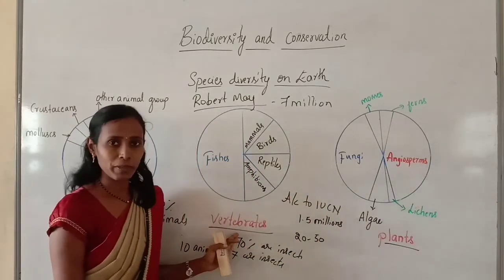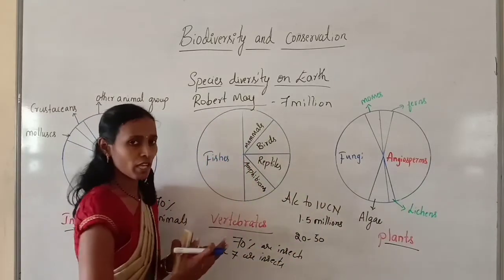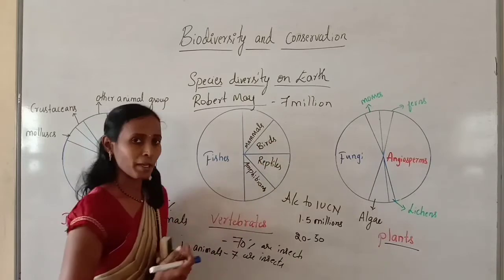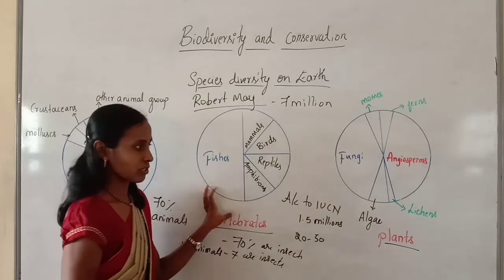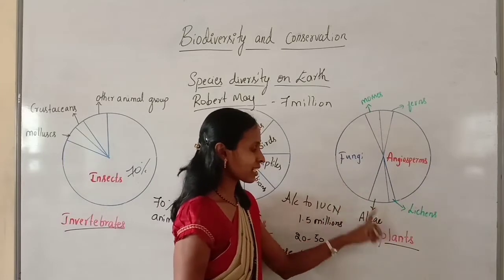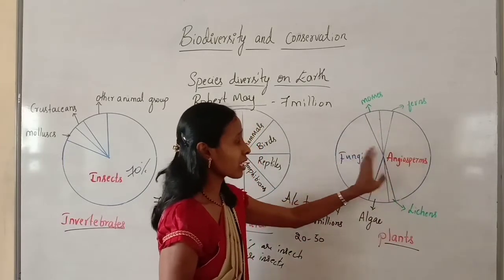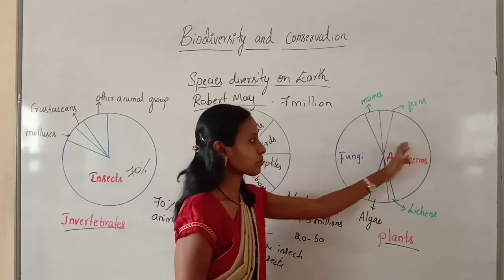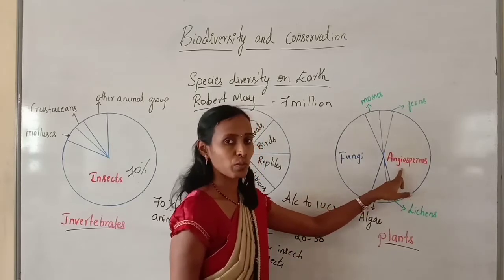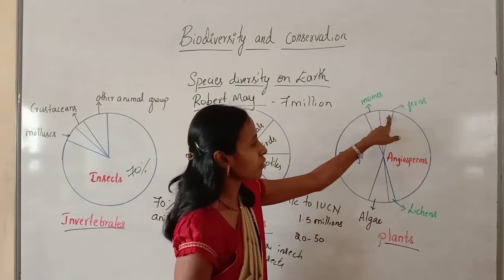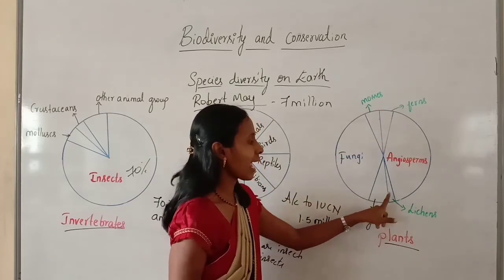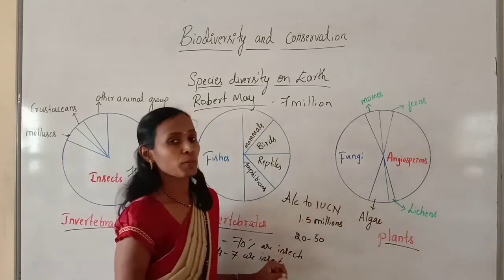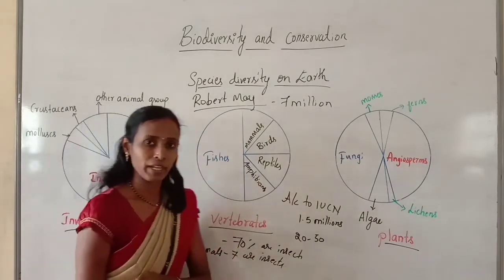When we look at the vertebrate species pie chart, fish have the highest number of species, while mammals and amphibians are of similar number, and birds and reptiles are of similar percentage. For plants, the percentage of fungi and flowering plants is the highest, while algae and lichens are the least represented.